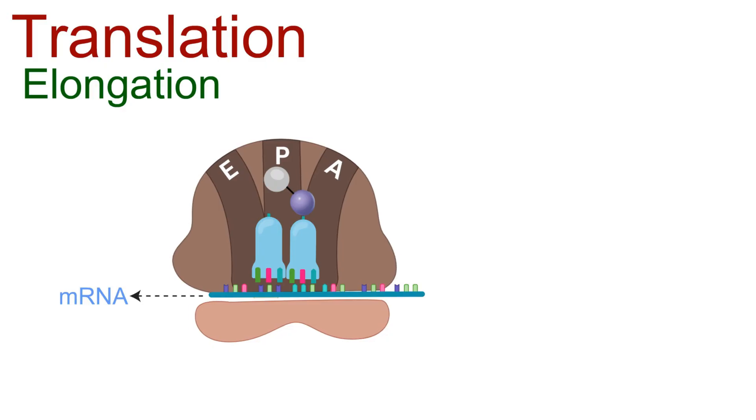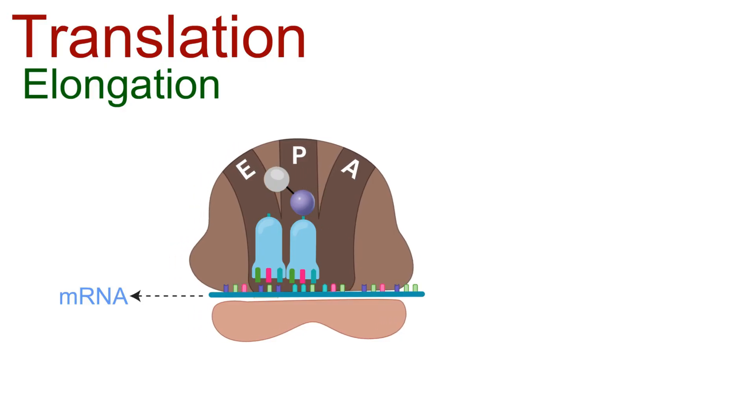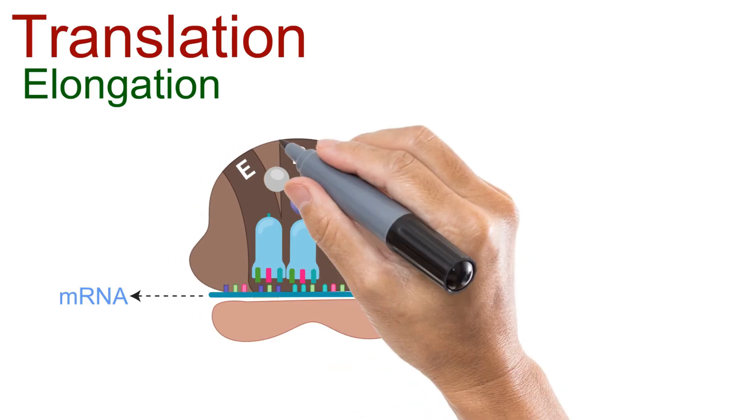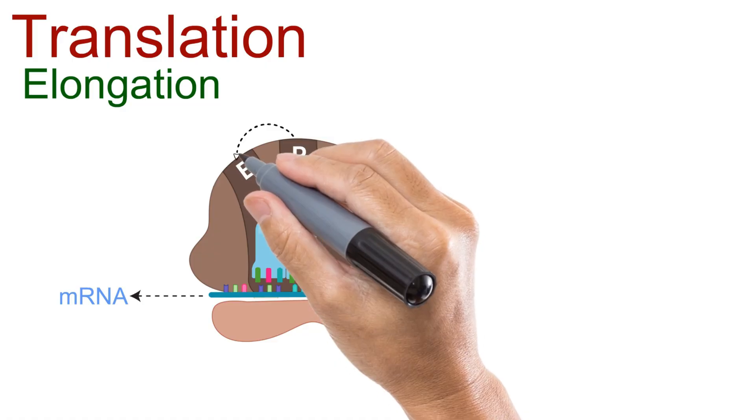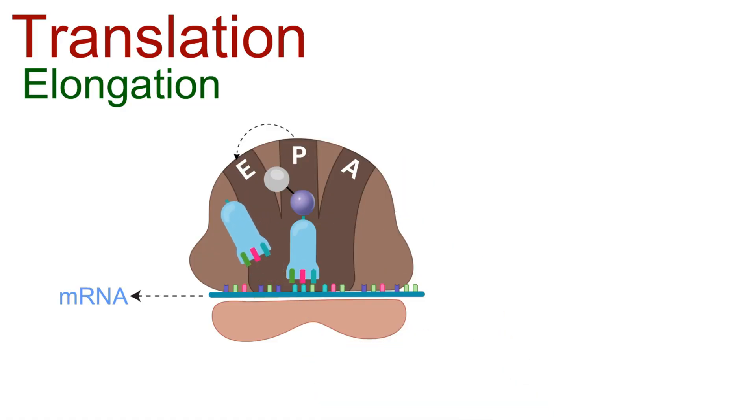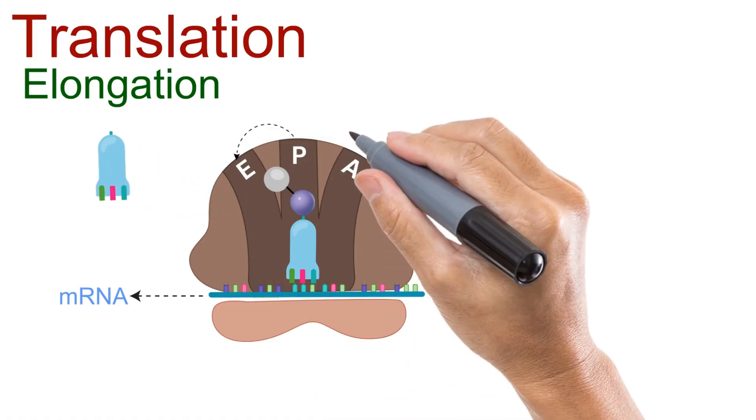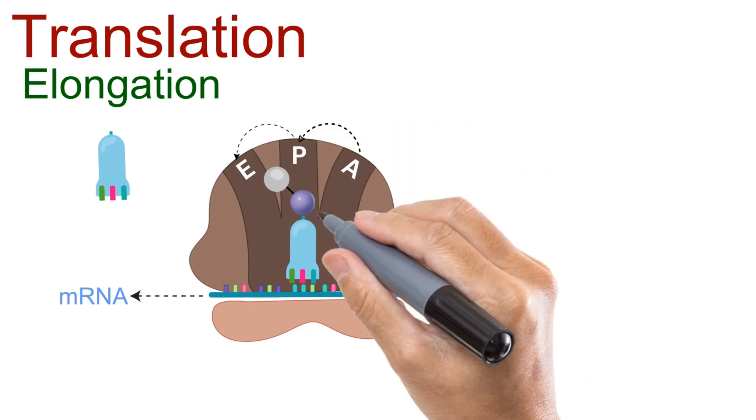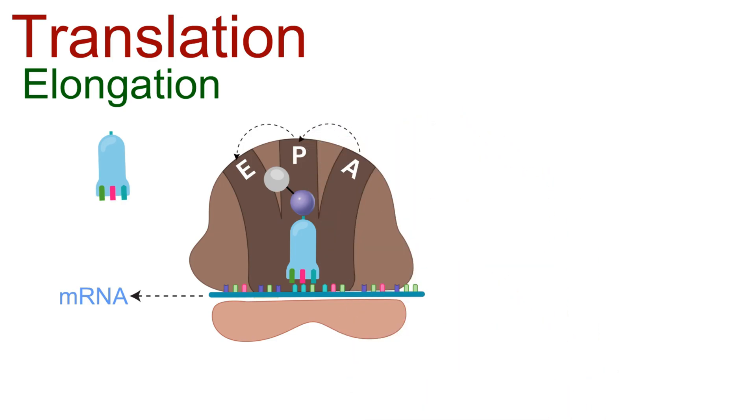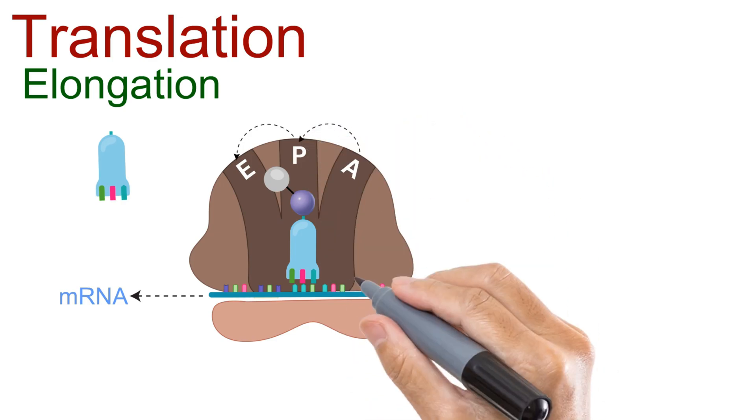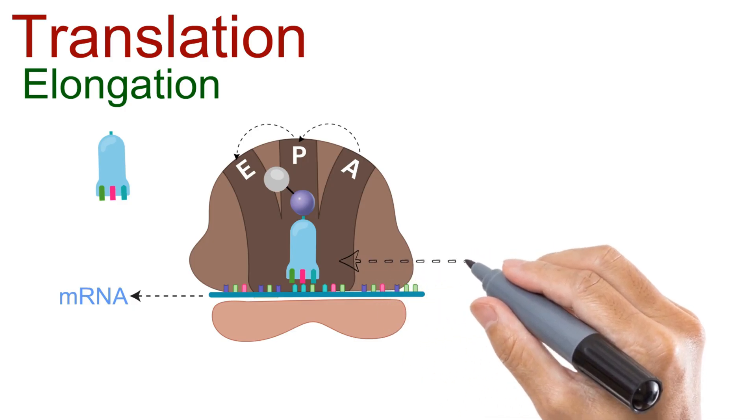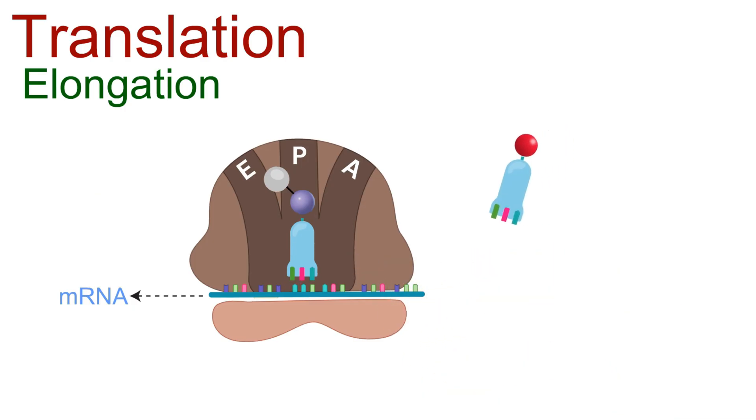Now, the ribosome shifts one codon forward along the mRNA. The tRNA that was in the P site now moves to the E site and exits. The tRNA that was in the A site, with the growing peptide chain, shifts into the P site. The A site is now empty, ready for the next incoming tRNA.